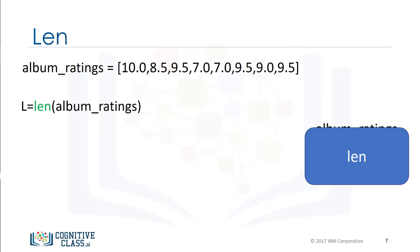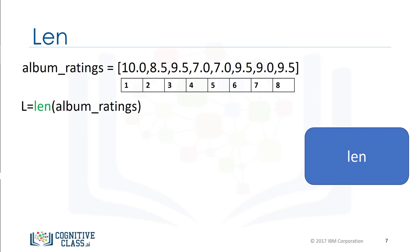Consider the following list. The len function takes this list as an argument, and we assign the result to the variable L. The function determines there are 8 items in the list, then returns the length of the list — in this case, 8.